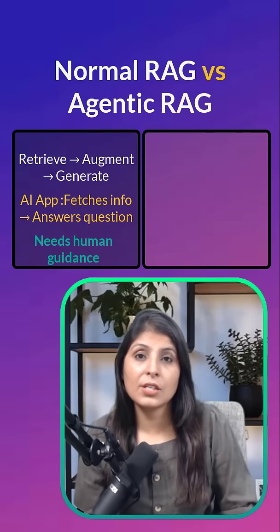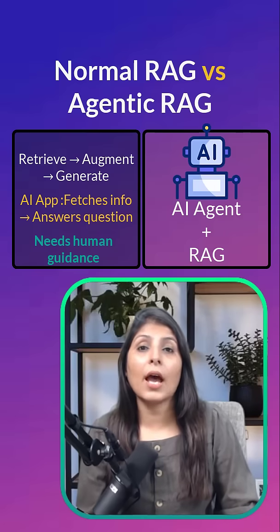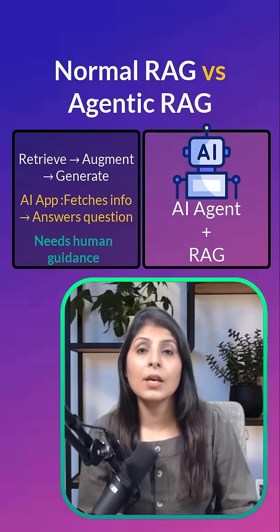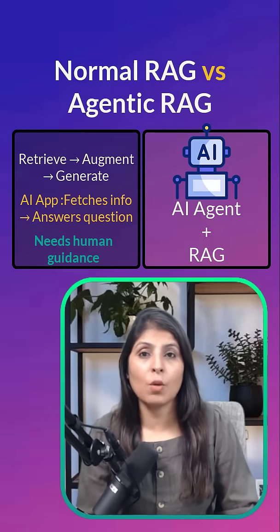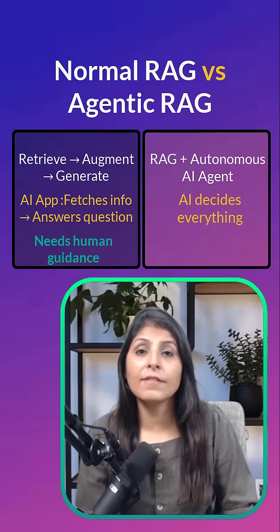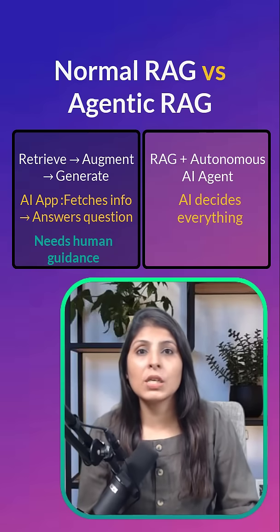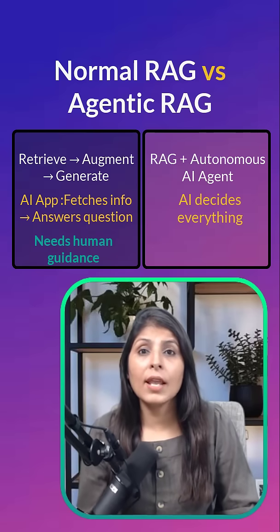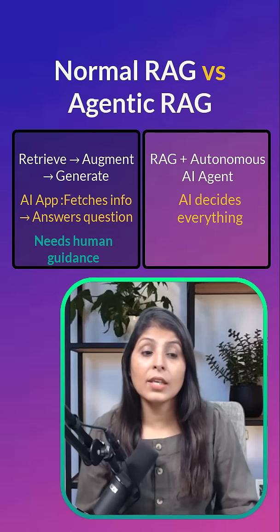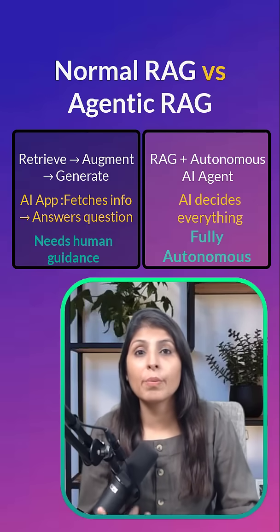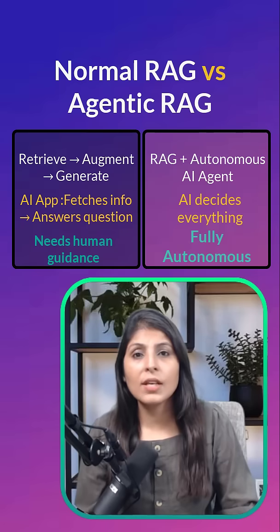Now let's see how Agentic RAG works. Agentic RAG combines RAG with an AI agent that can plan, reason, and act autonomously. The AI agent itself decides where to search — which database, website, or PDF file — and how to select the most relevant sources, and then how to summarize or present the answer to the user.